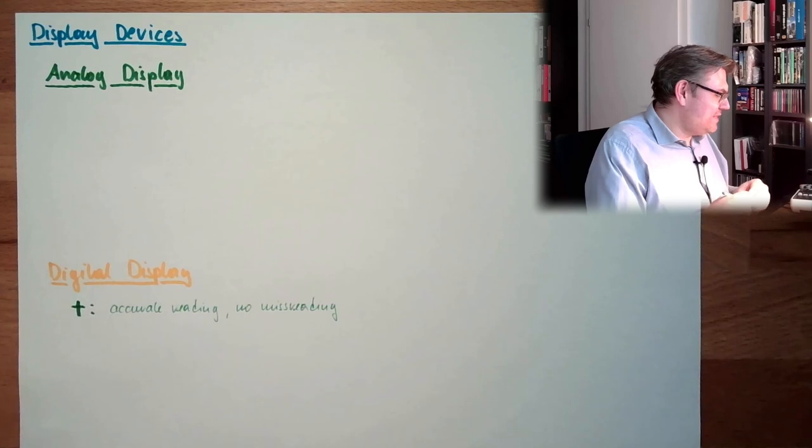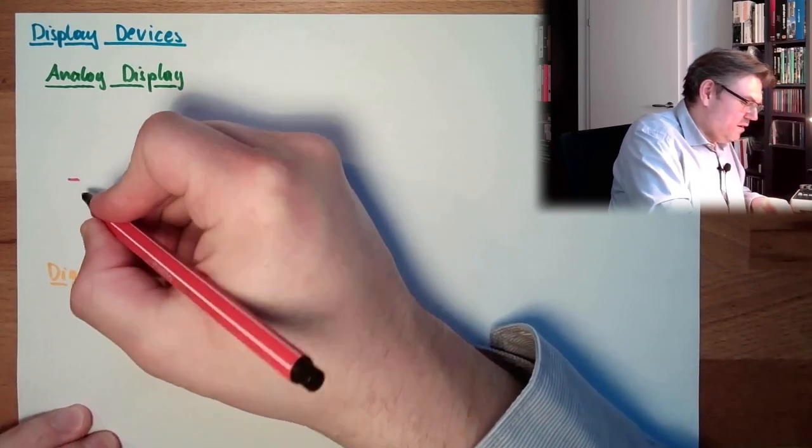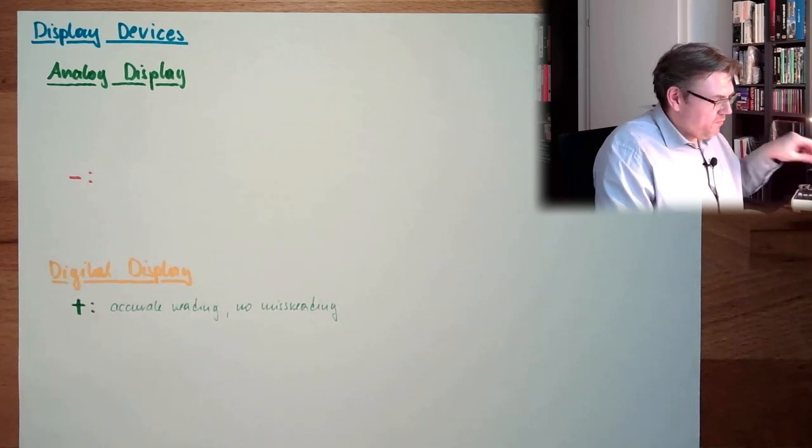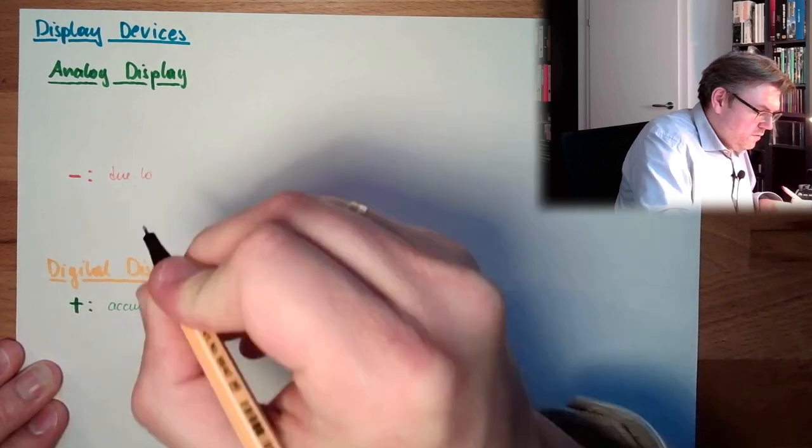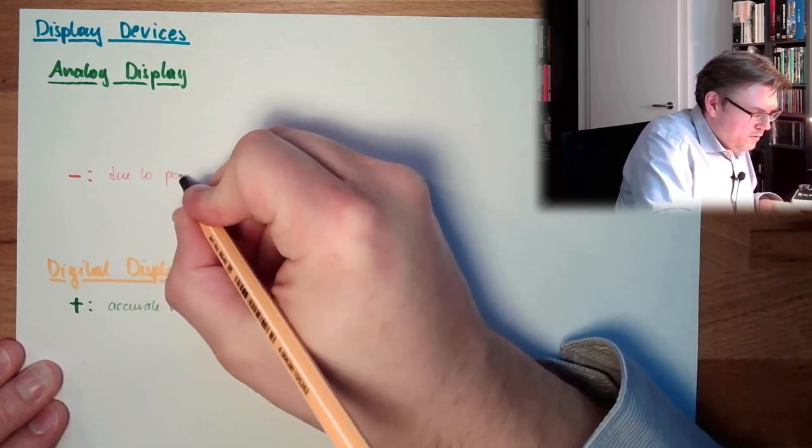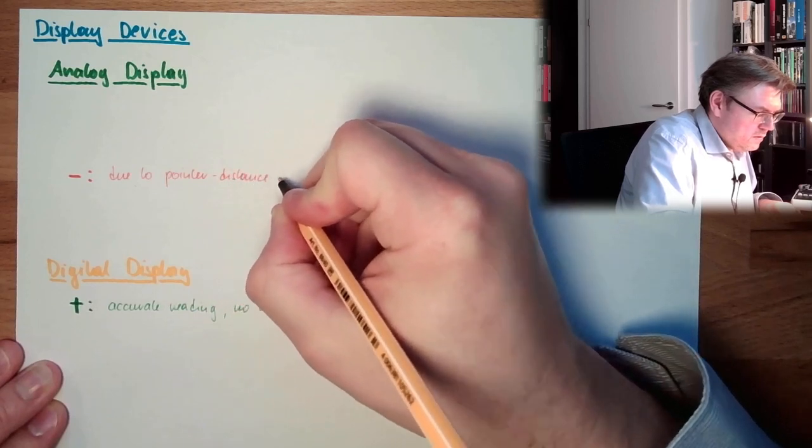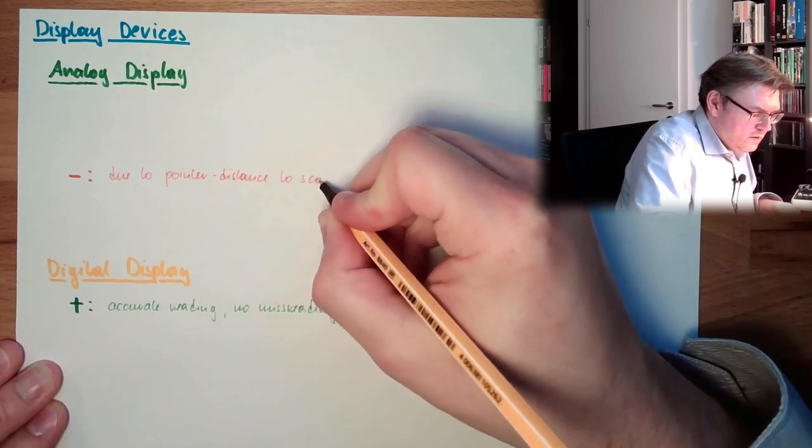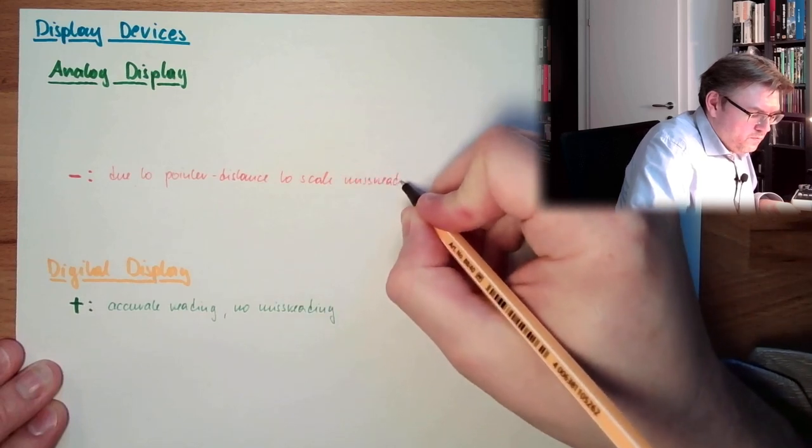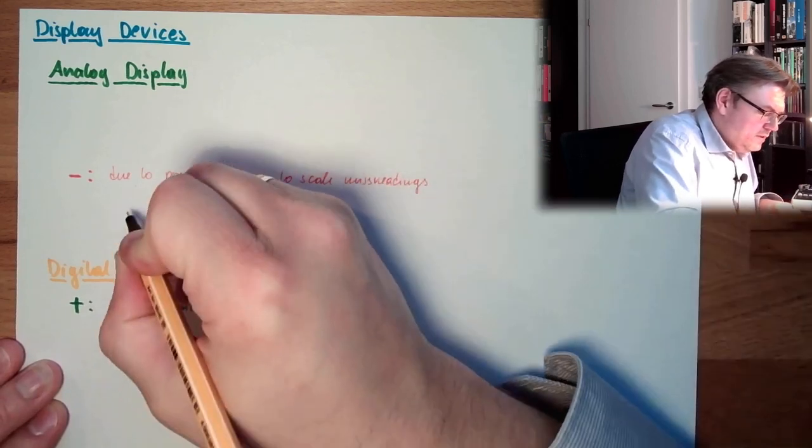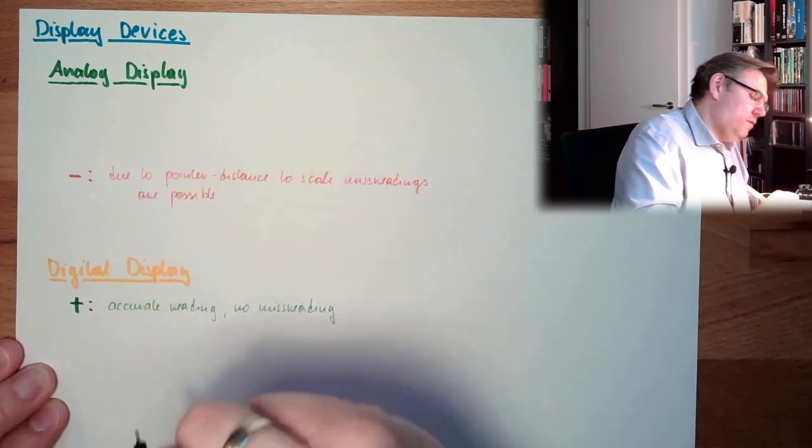That's the downside here, so here we have downside on the analog display. Due to pointer distance to scale, misreadings are possible, alright?